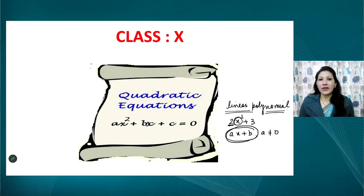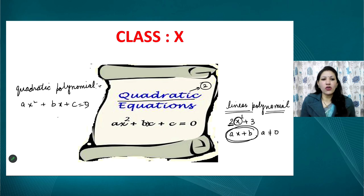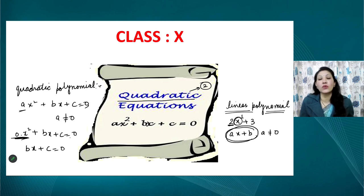A quadratic polynomial has degree 2. Its general form is ax² + bx + c. The key condition is that the value of 'a' must never be zero. If a becomes zero, then the coefficient of x² becomes zero, that entire term vanishes, and the remaining expression bx + c reduces it to a linear polynomial again.